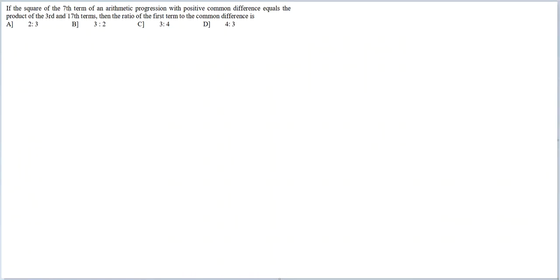Let's look at this question. If the square of the 7th term of an arithmetic progression with positive common difference equals the product of the third and 17th terms, then the ratio of the first term to the common difference is.